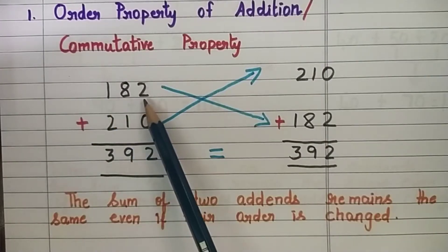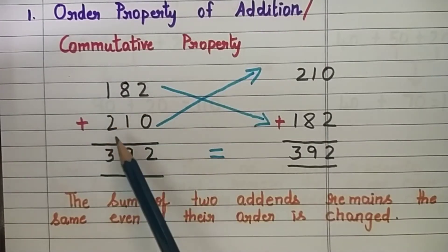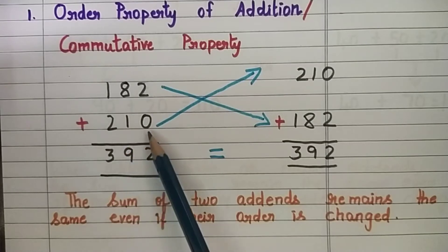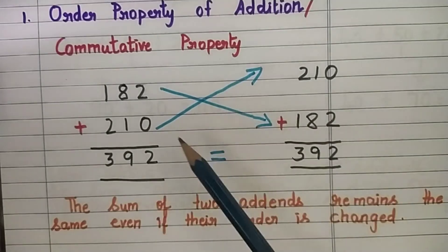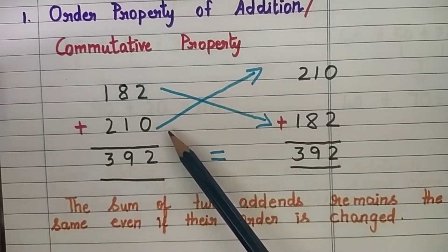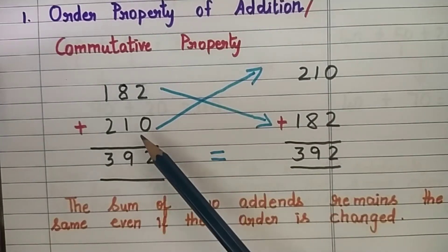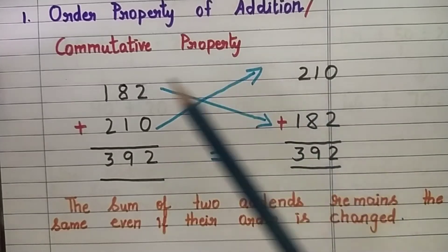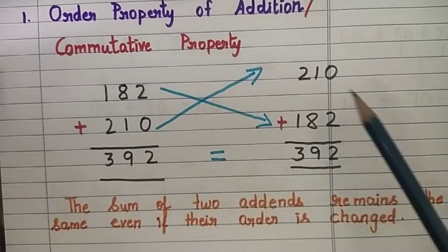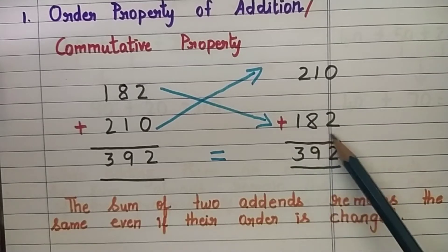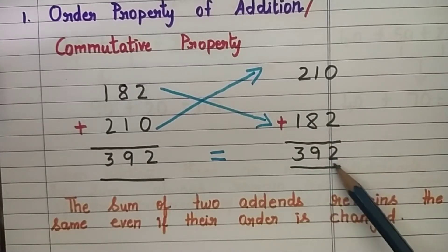For example, 182 is the first addend plus 210 is the second addend. When you put them together, we get the sum 392. Now let us change the order, children. The second addend becomes the first addend and the first addend becomes the second addend, and then we add: 210 plus 182, we get the sum 392.